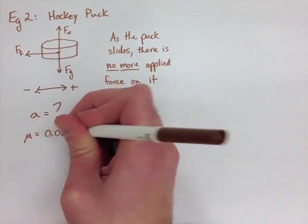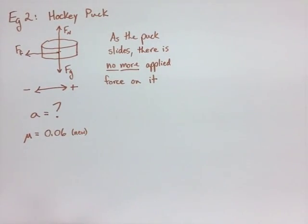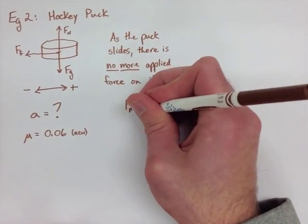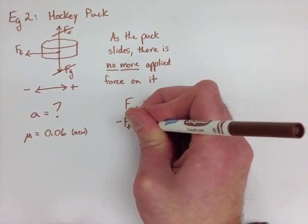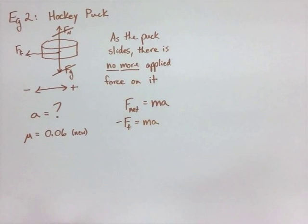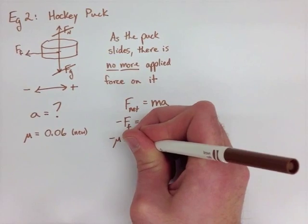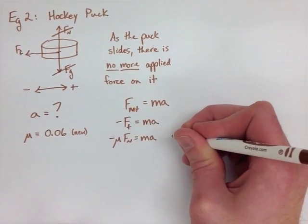So, we have our positive to the right, our negative to the left. We're looking for our acceleration. We have mu, as I said, to be 0.06. Now, we sub into our formula of F net equals ma. We know there's only a negative force because it's friction. So, we have negative force of friction equals mass times acceleration.